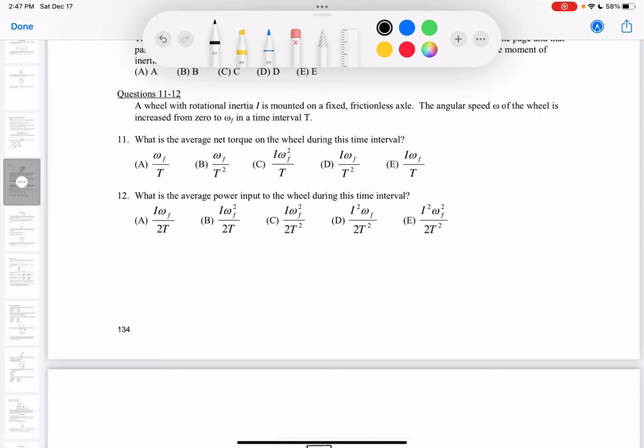Hello, let's look at number 11. It says a wheel with rotational inertia I is mounted on a fixed frictionless axle. The angular speed omega of the wheel is increased from 0 to omega F in a time interval T. What is the average net torque on the wheel during this time interval?